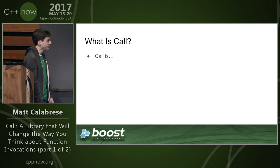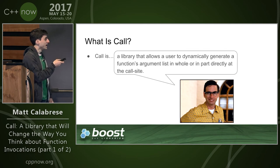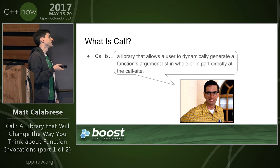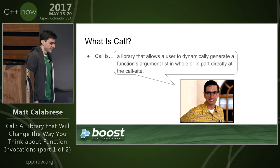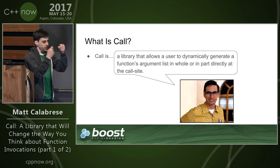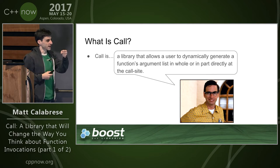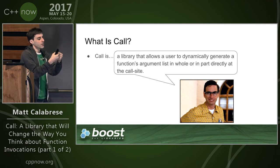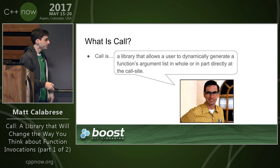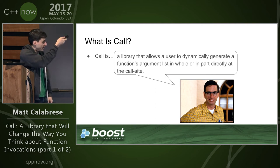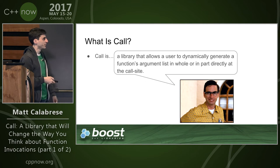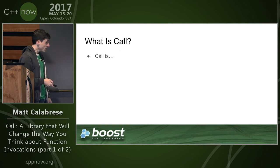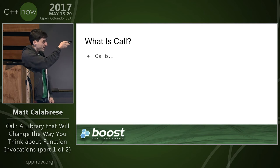The first description: call is a library that allows a user to dynamically generate a function's argument list in whole or in part directly at the call site. The general idea is that you can give it a description of your argument list rather than the argument list itself. This description tells the internal function where and when it should expand individual pieces.